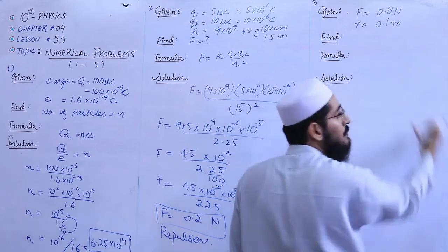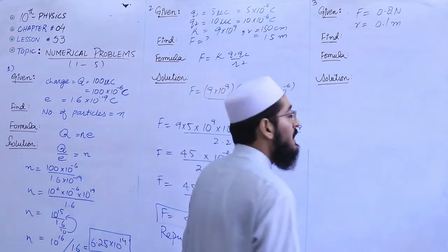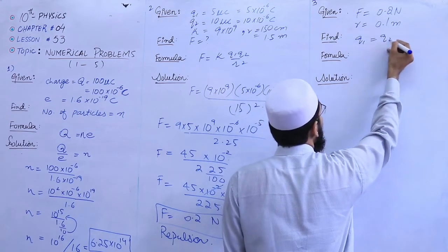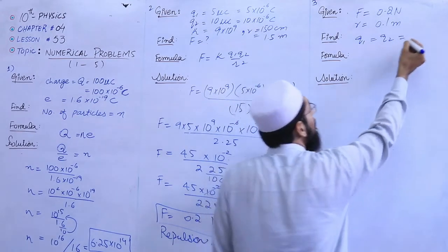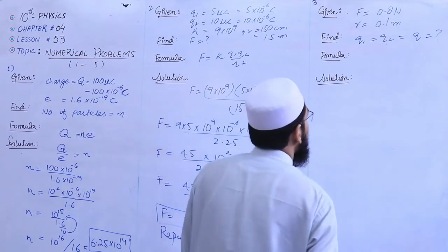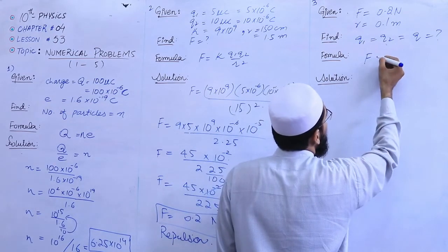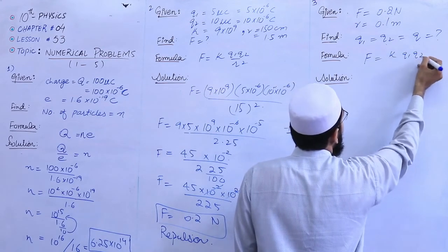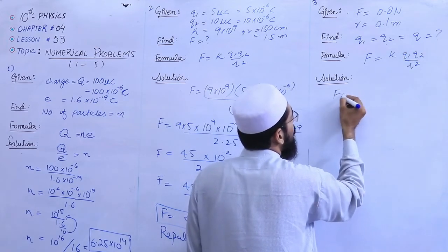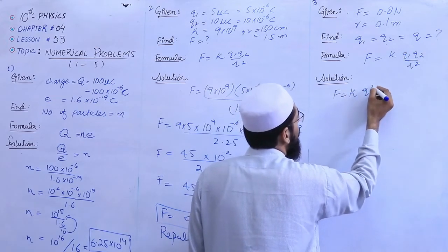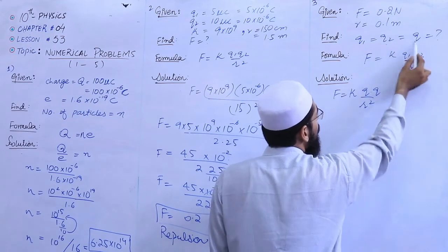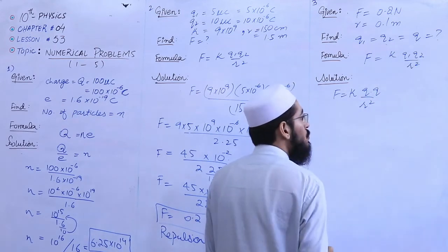We have to find the two identical charges. Since the charges are identical, Q1 equals Q2 equals Q. So let us set up the formula. The formula is K Q1 Q2 over r squared, but since the charges are identical we change the formula to F equals K Q squared over r squared. Q squared is used because Q times Q, substituting Q1 and Q2 both as Q, gives Q squared.